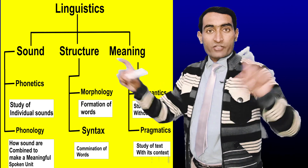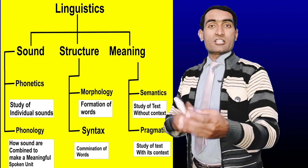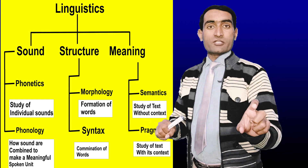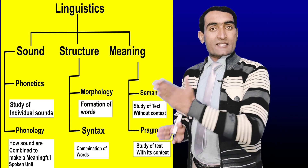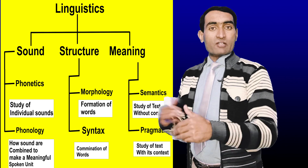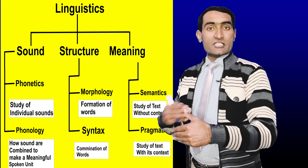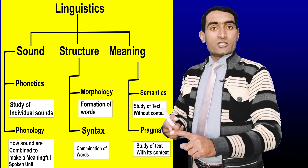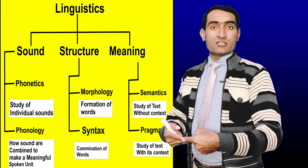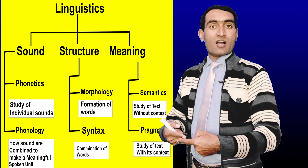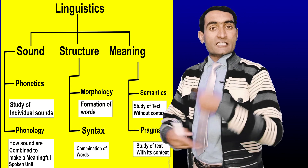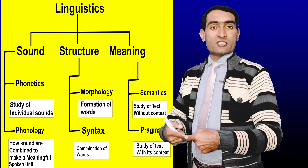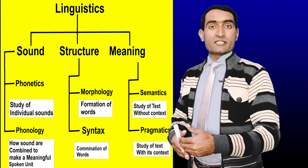Pragmatics, in contrast, is the contextualized study of text. You study the words along with the context — the circumstances, situation, and conditions in which those words were spoken or written. So: contextualized study of text is pragmatics, and decontextualized study of text is semantics. I hope your concepts are now clear. Stay tuned, thank you very much.